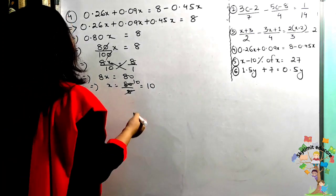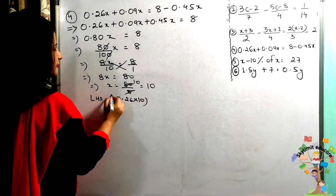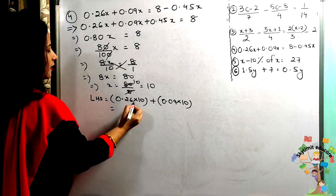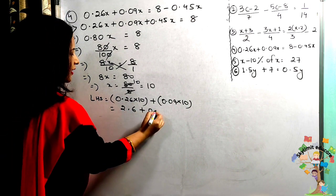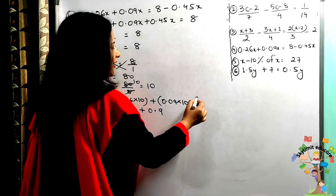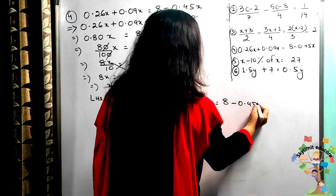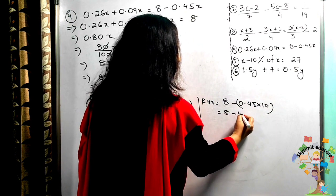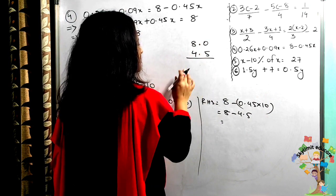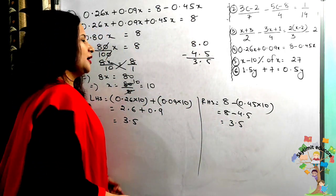Substituting x = 10 to verify. Left hand side: 0.26 × 10 + 0.09 × 10 = 2.6 + 0.9 = 3.5. Right hand side: 8 − 0.45 × 10 = 8 − 4.5 = 3.5. Left hand side equals right hand side — verified.